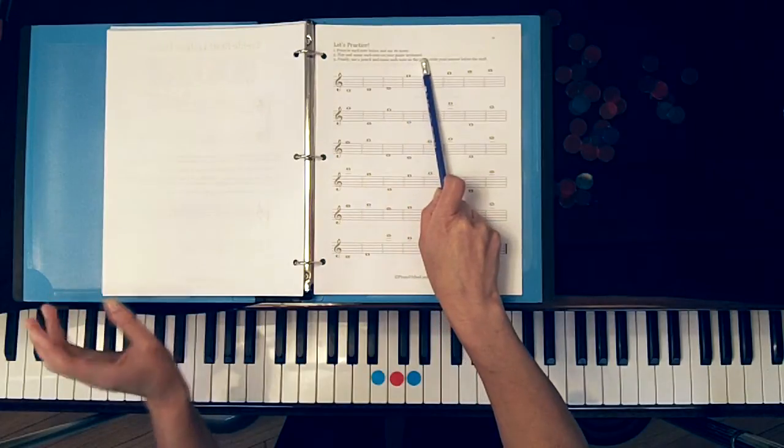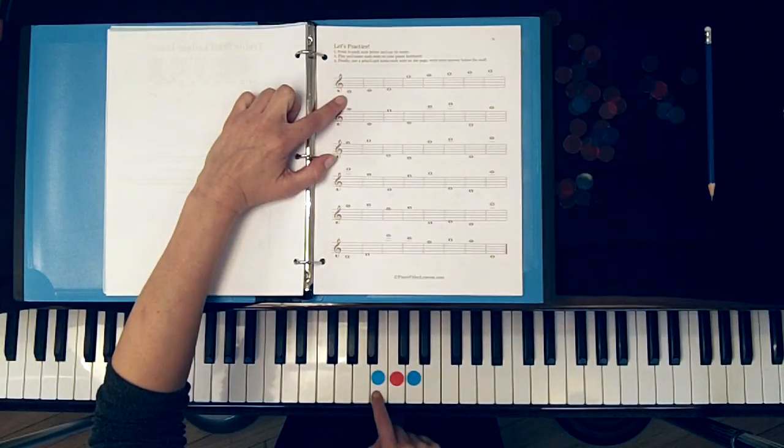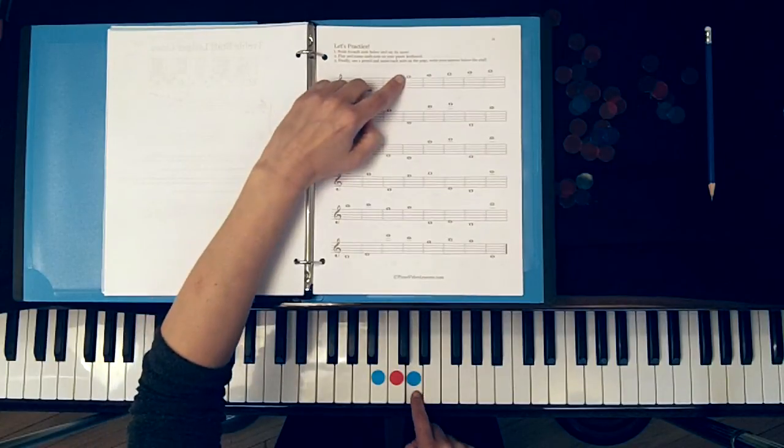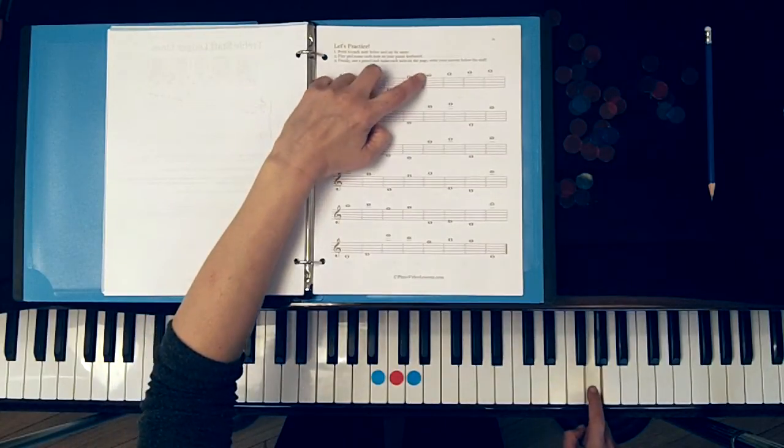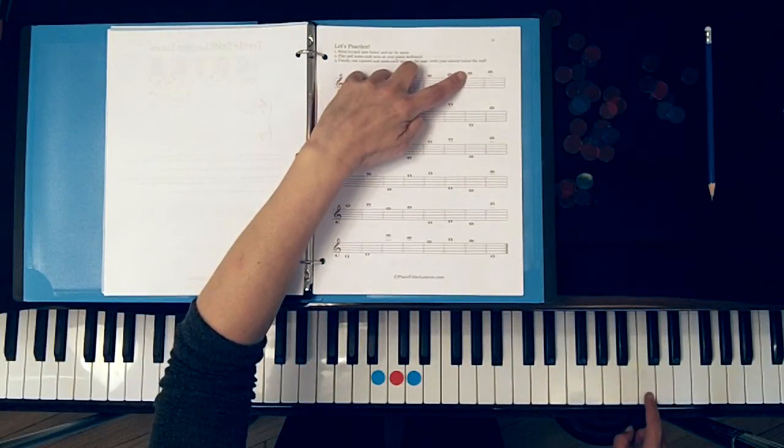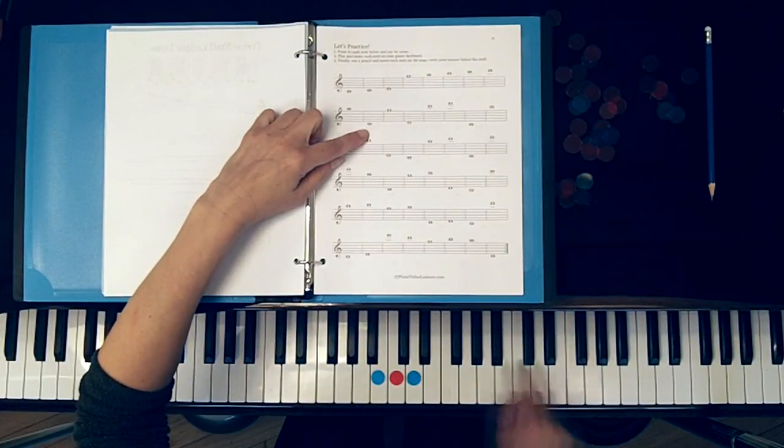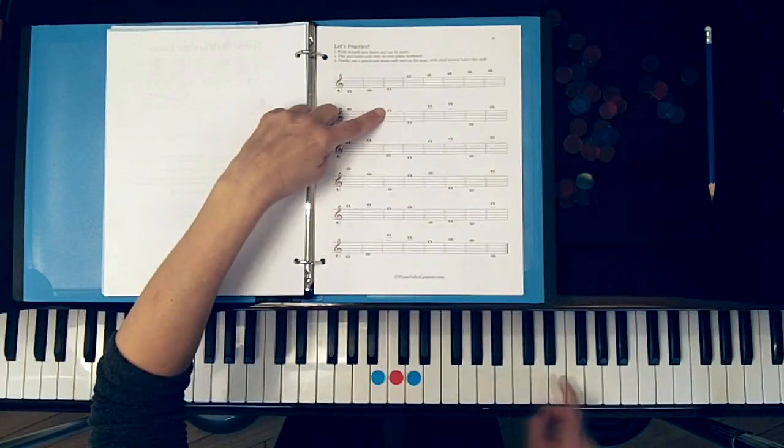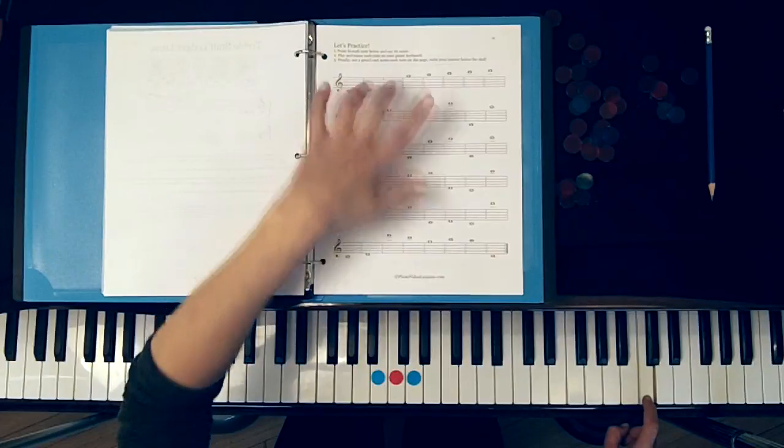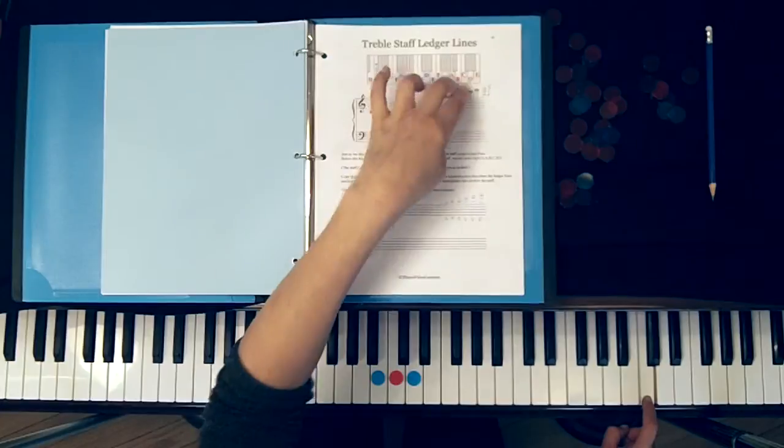Then you should move on to step two. Step two says play and name each note on your piano keyboard. Look at the note, say the name, and play it. Here we go: B, C, D, G, A, B, C, D. Now they get a little more scrambled up: A, C, G, D, C.